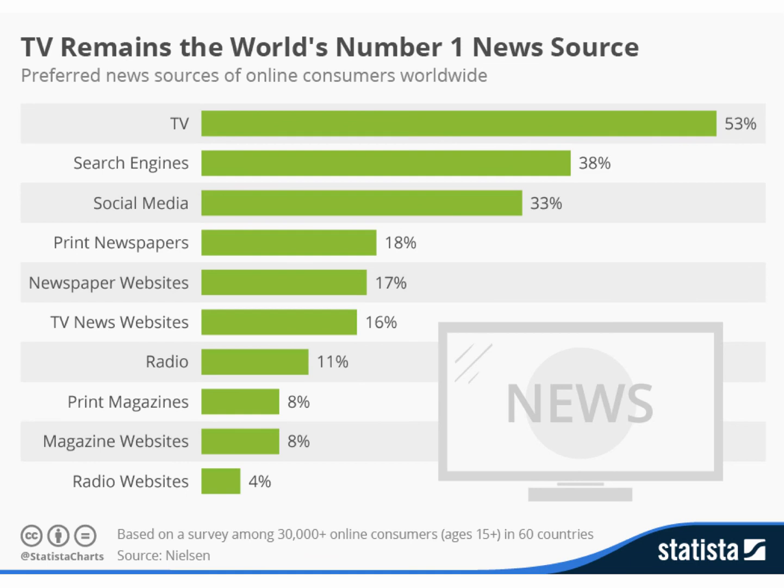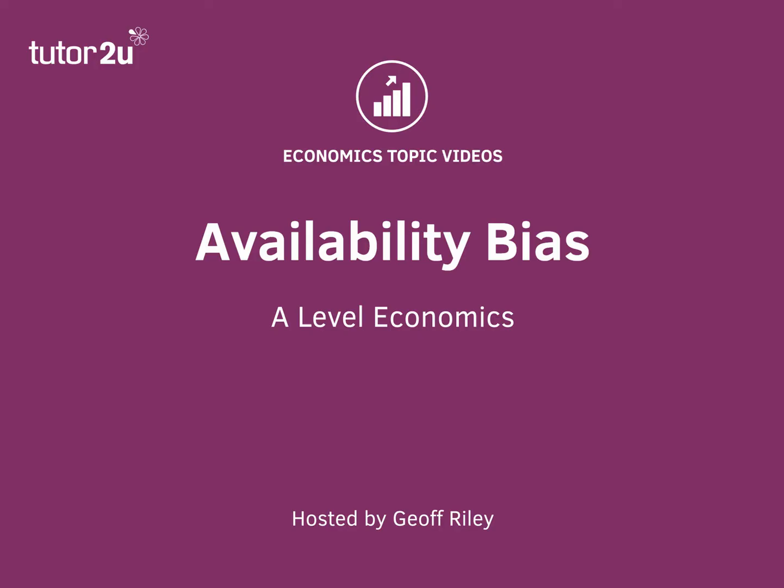Although print newspapers have fallen quite a long way behind. So here's an example of the availability heuristic — the examples that come to your mind are not necessarily those that are relevant for the wider population. This is what we mean by the availability bias or the availability heuristic.